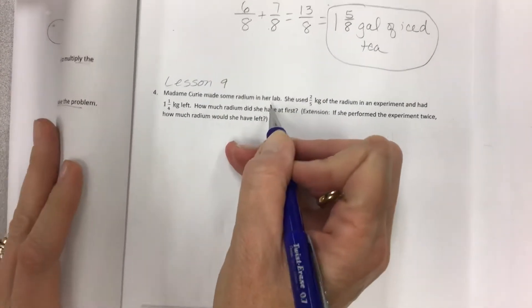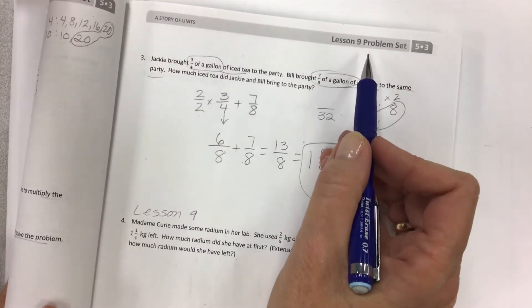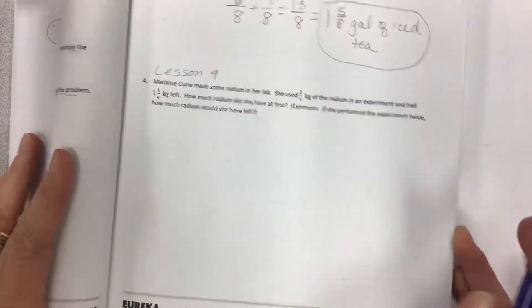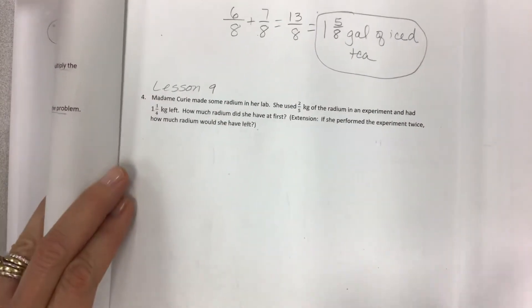Madame Curie made some radium in her lab, and by the way this is still lesson 9 continued, the problem set module 3 page 67 if you have the same type of printed workbook that I have.